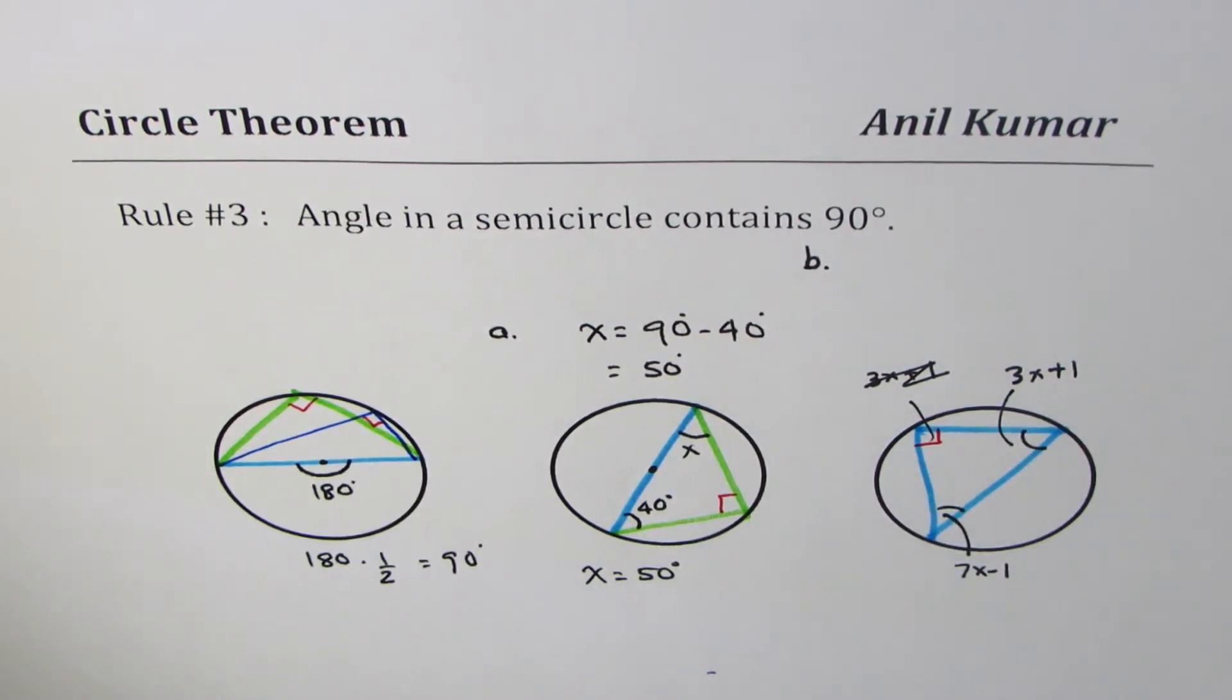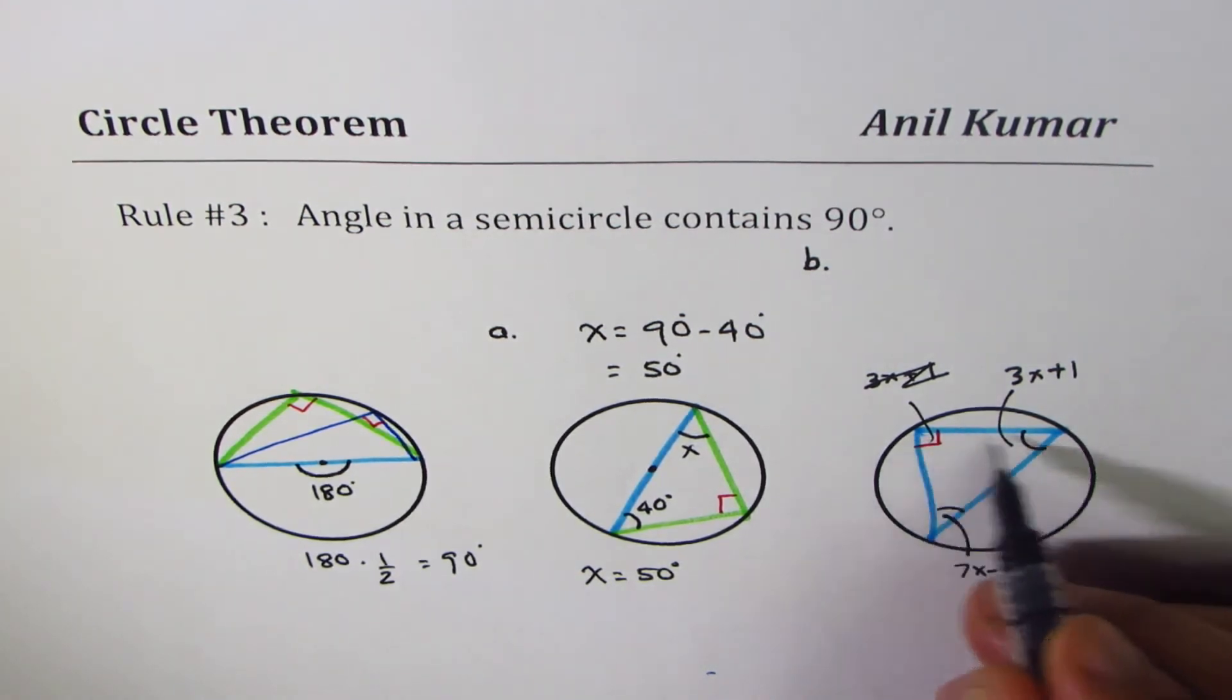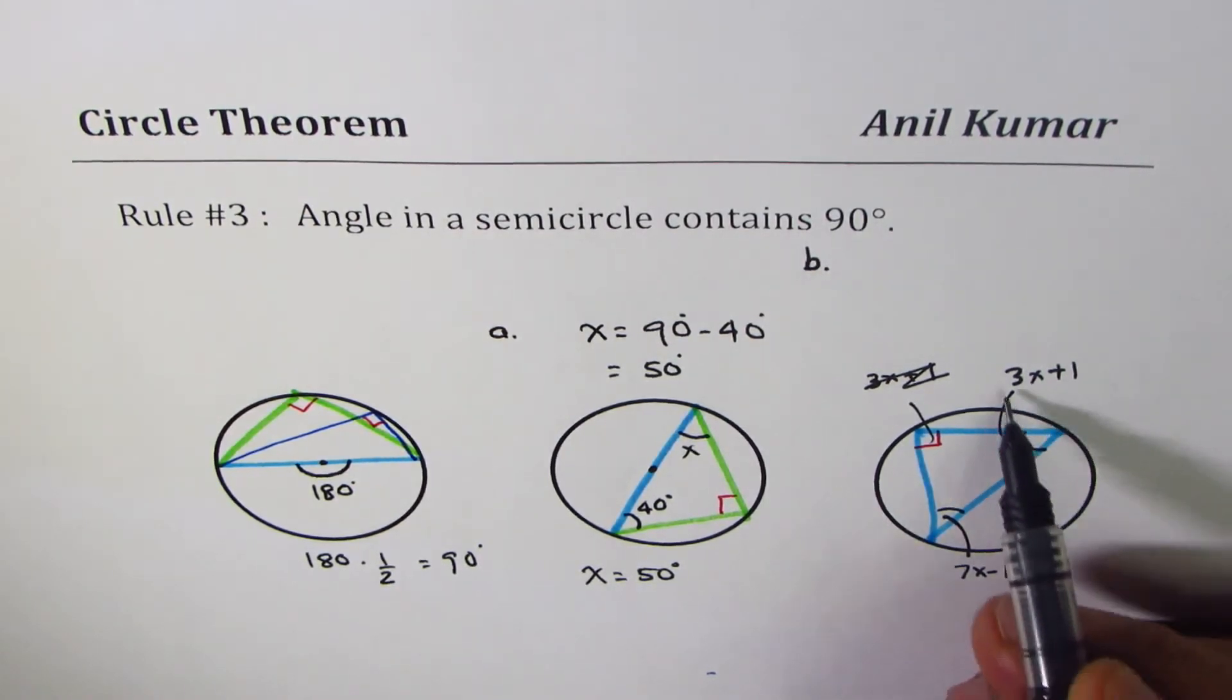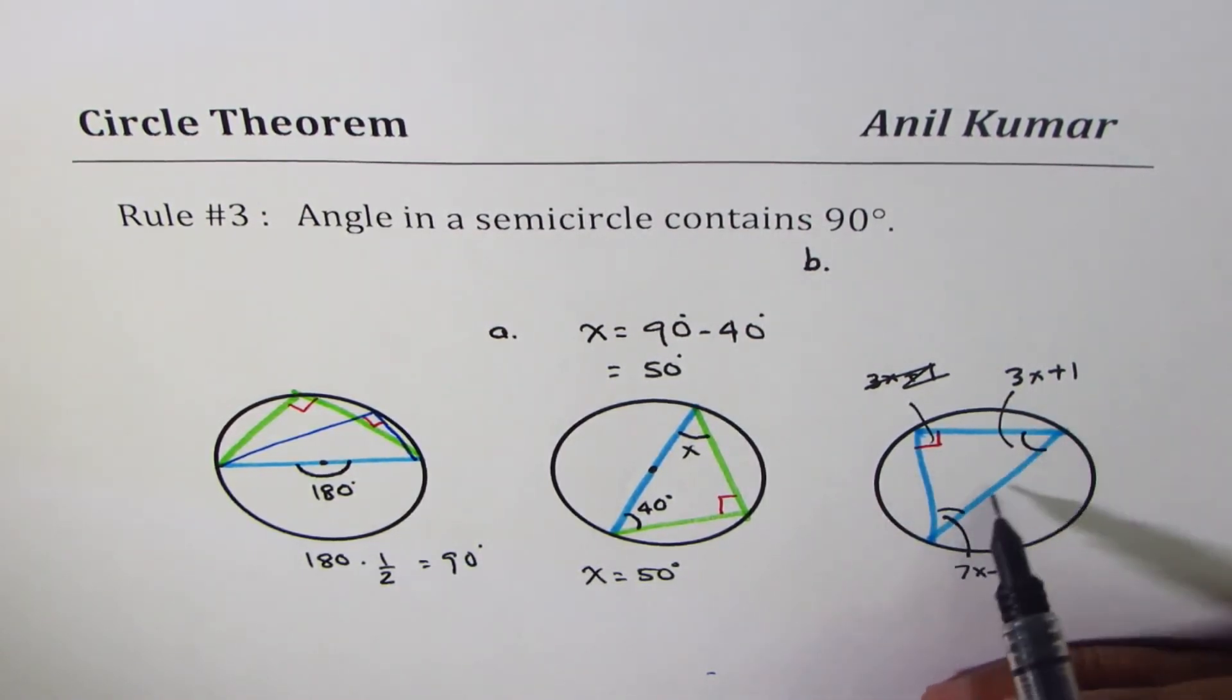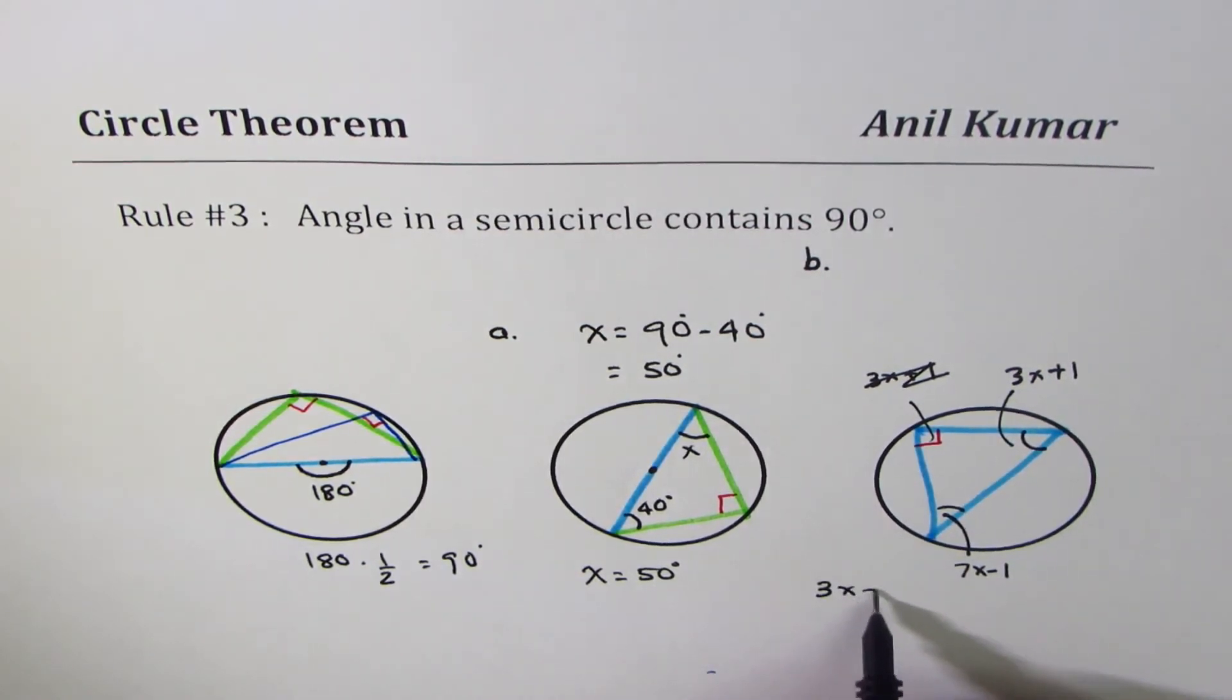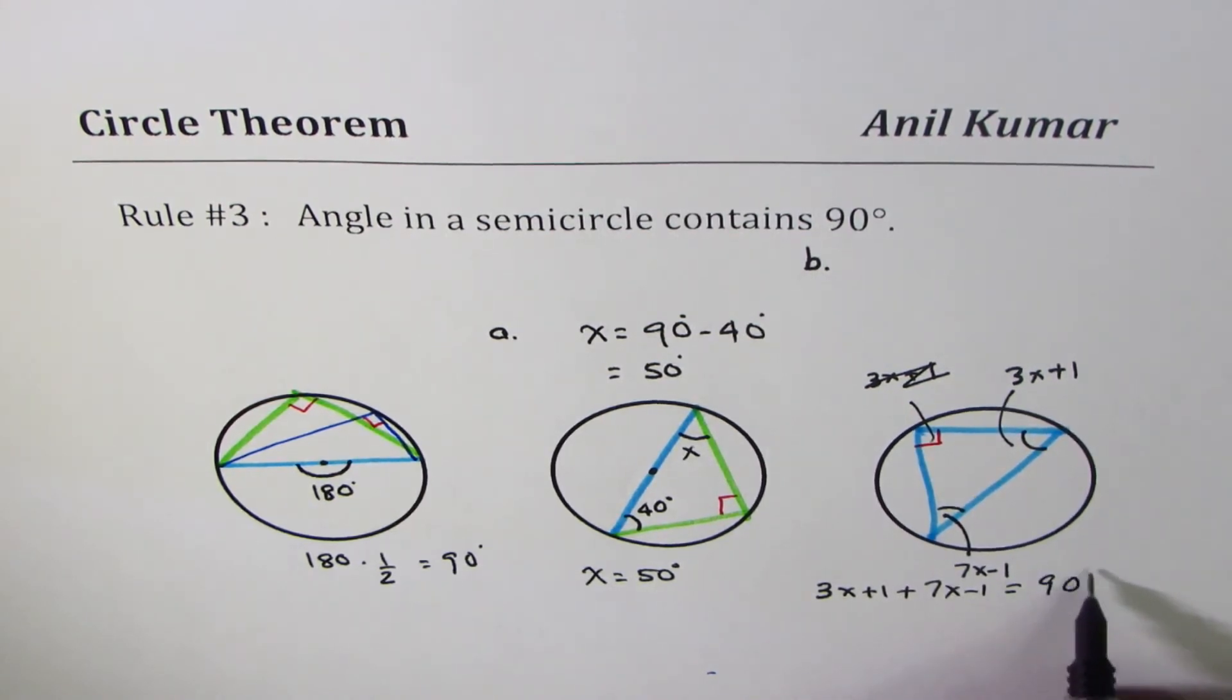Now let's find angle x. The sum of these two angles should be 90, so we can solve this as 3x plus 1 plus 7x minus 1 equals 90 degrees.